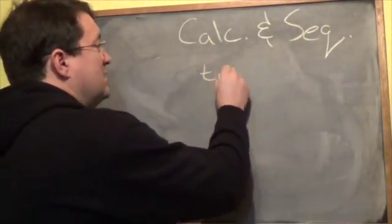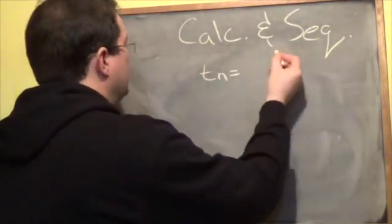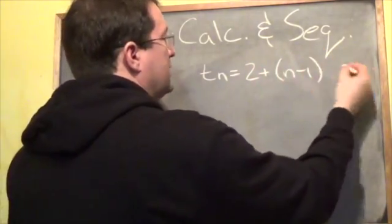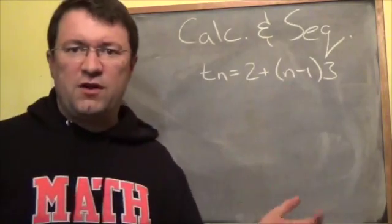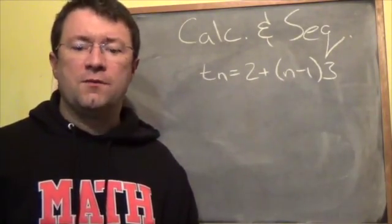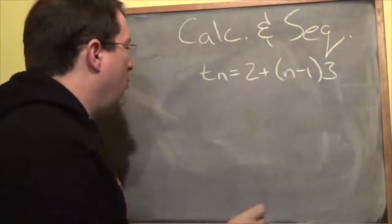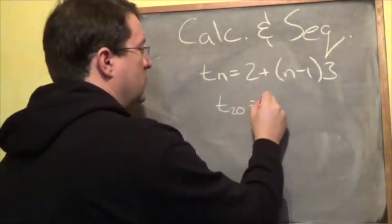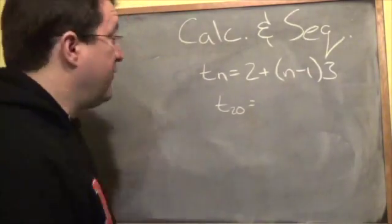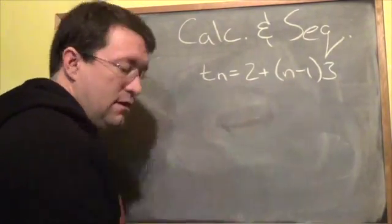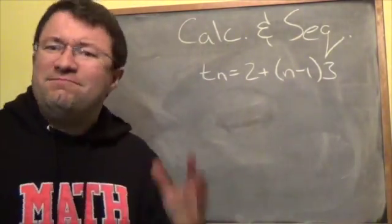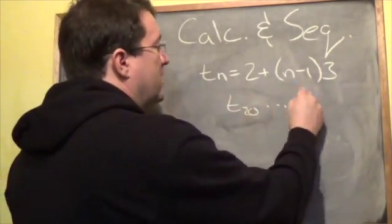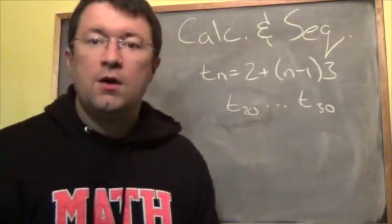Let's say we have a straightforward arithmetic sequence: tn = 2 + (n − 1) × 3. Now let's say I wanted to figure out what the 20th term in the sequence was — or better stated, let's say I want to know t20 all the way up to t30.